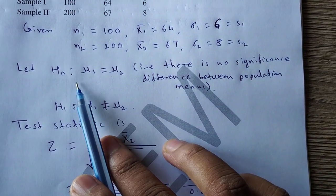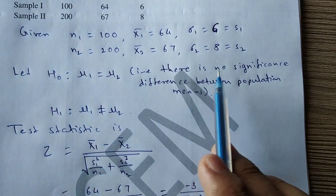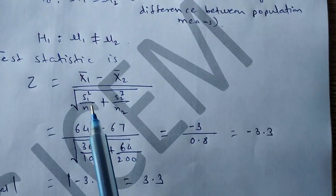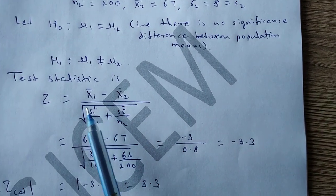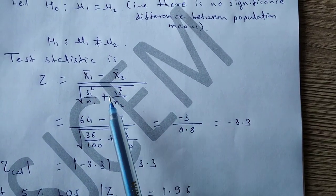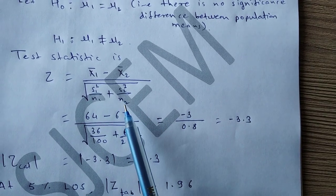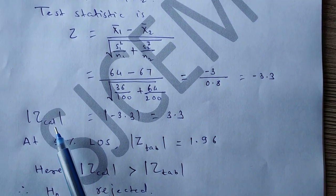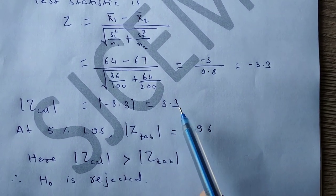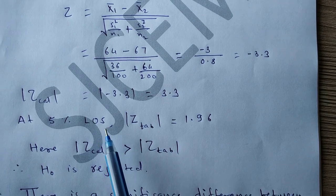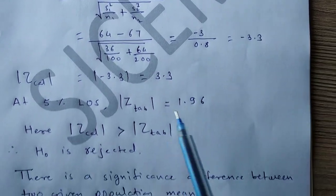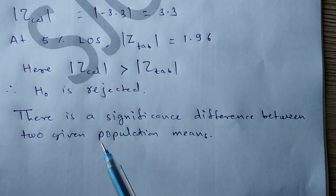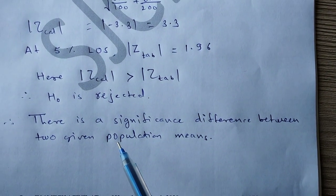Consider the null hypothesis H0 as mu1 equal to mu2, meaning there is no significant difference between the population means. The alternate hypothesis is mu1 not equal to mu2. Using the test statistic Z equal to x1 bar minus x2 bar divided by the square root of s1 square by n1 plus s2 square by n2, the value is minus 3.3, so the absolute value of Z calculated is 3.3. At 5% level of significance, the tabulated value of Z is 1.96. Since Z calculated is greater than Z tabular, H0 is rejected. Therefore, there is a significant difference between the two given population means.